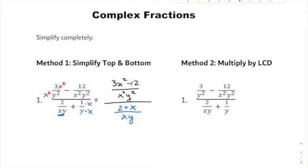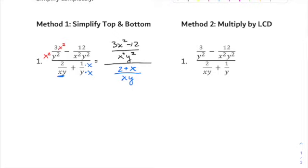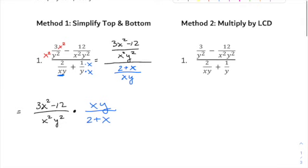Now you have a single fraction divided by another fraction. This is where you take the first fraction and multiply by the reciprocal of the second — that's how you divide two fractions. So: (3x² minus 12) over x²y² multiplied by the reciprocal, which is xy over (2 plus x), or (x plus 2) if you prefer.